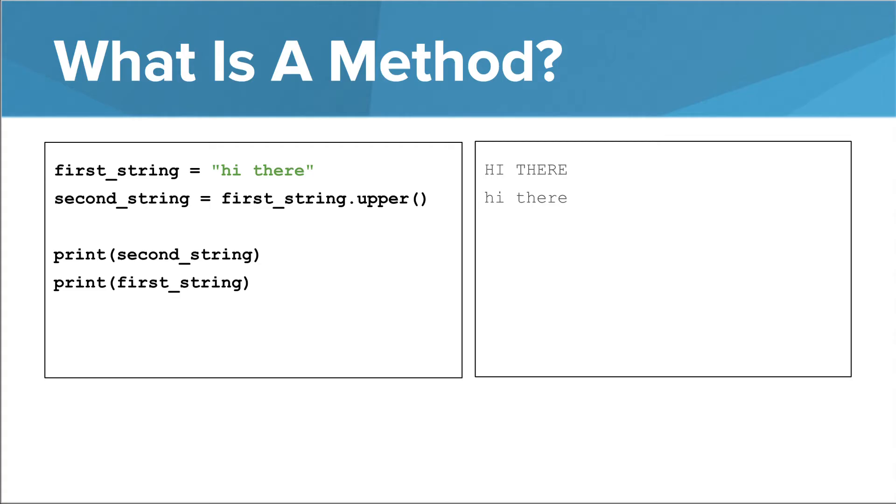If we change the value of first_string, the upper method still works as expected. We can even call the method on a string literal, like this. In this example, no variable holds the lowercase version of eggplant. All we have is a variable that holds the return value of upper, which in this case is the uppercase version of eggplant.